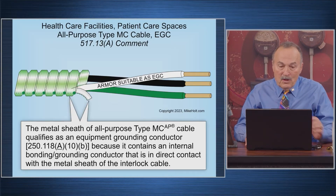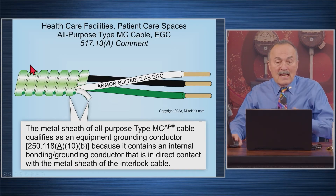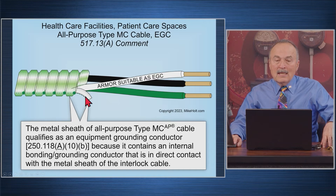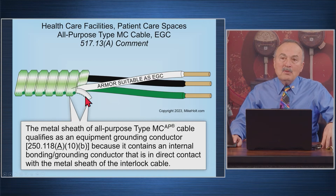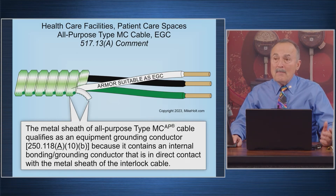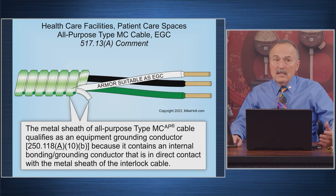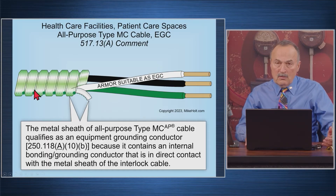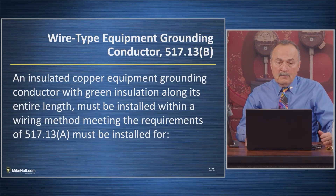If it goes up to a 10-gauge bonding strip, then it's MC cable. It doesn't really matter — the armor of that sheath is considered, because of the convolutions, part of the effective ground fault current path. And of course, EMT qualifies as well. Now we're moving to Section B.